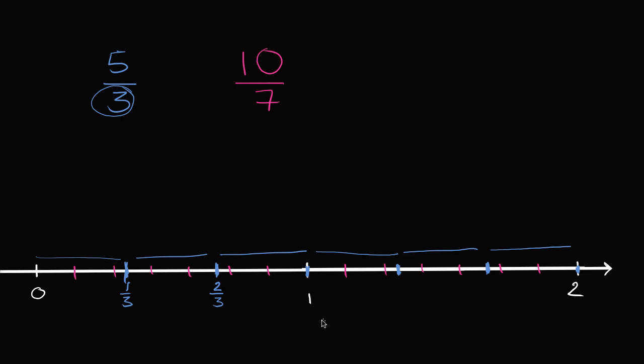So this is 1/3, this is 2/3. This is 3/3, which is of course the same thing as 1. This is 4/3. And then this right over here is going to be 5/3. And if we were to go over here, 2 would be the same thing as 6/3. But what we care about is 5/3. So that's that right over there. 5/3 is that right over there.